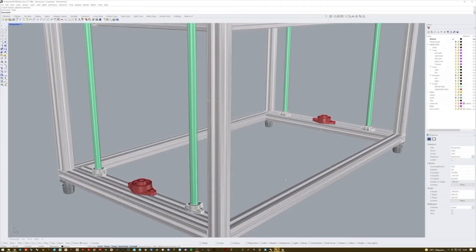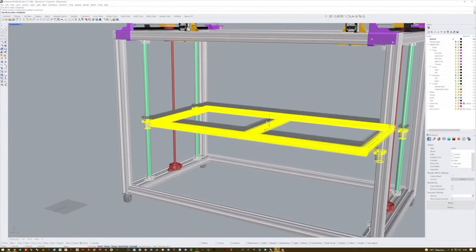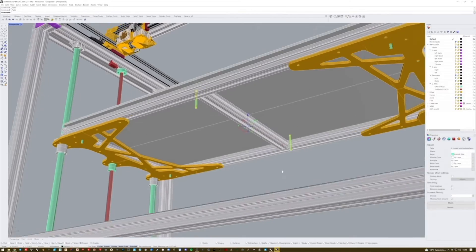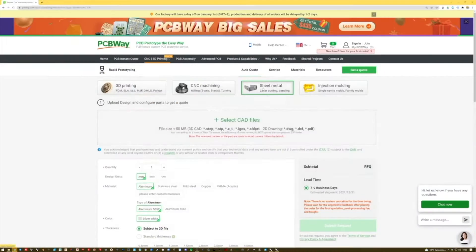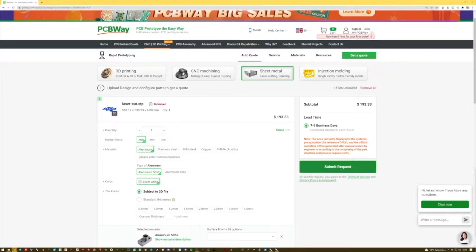In the last episode of the build we designed in Rhino all the necessary components that we need to build the Z axis of the Mega. We designed all the special pieces that attach the vertical profiles to the bed of the printer and at the end of the video we made the order for the laser cut parts on pcbway.com.